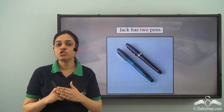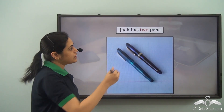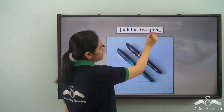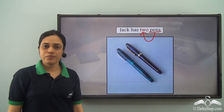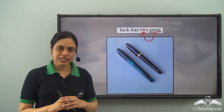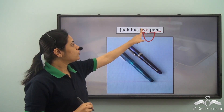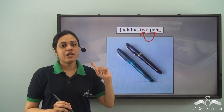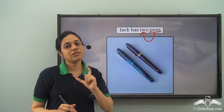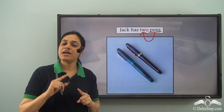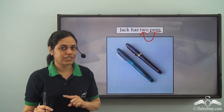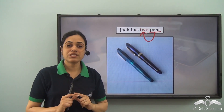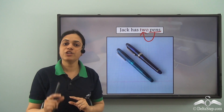'Jack has 2 pens.' Here, pens is the noun and the describing word is 2, so 2 is an adjective. It is telling us the exact number of pens — because it tells us the exact number, it is a definite numeral adjective of the cardinal type. So, 2 denotes a cardinal definite numeral adjective.